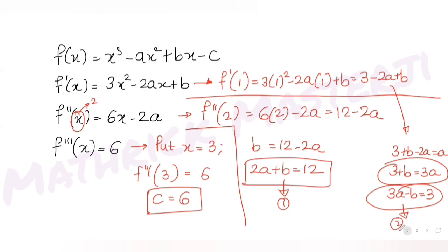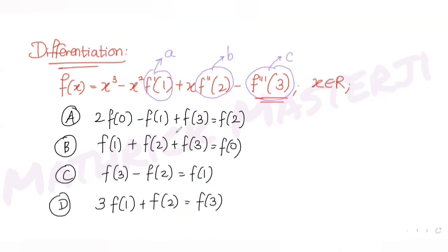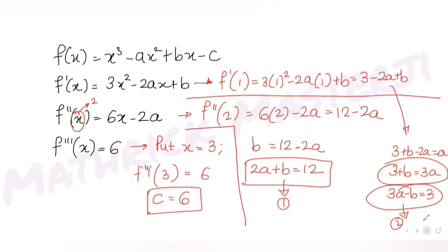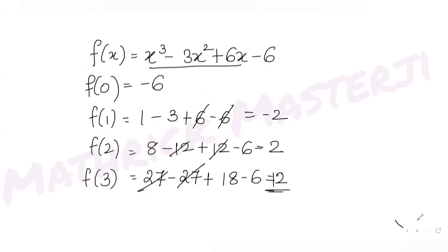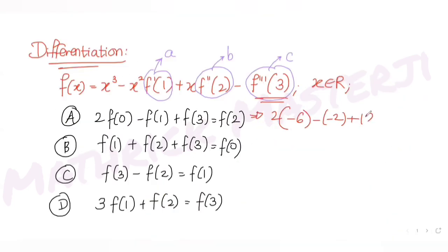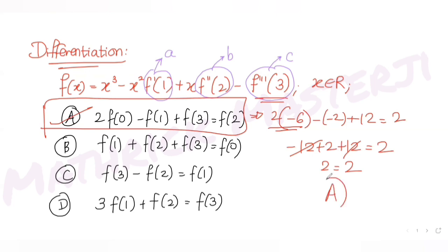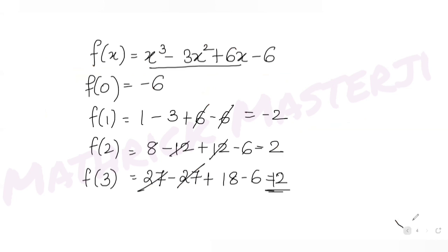Now let's verify the first answer choice: 2·f(0) − f(1) + f(3) = f(2). We get 2·(−6) − (−2) + 12 = −12 + 2 + 12 = 2, which equals f(2). Left-hand side equals right-hand side. So option A is the correct answer.